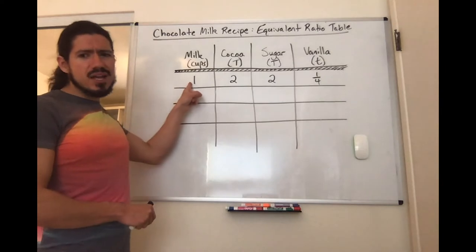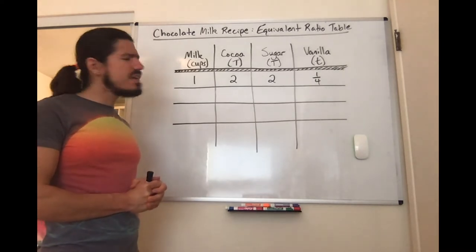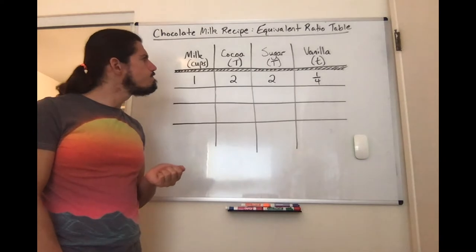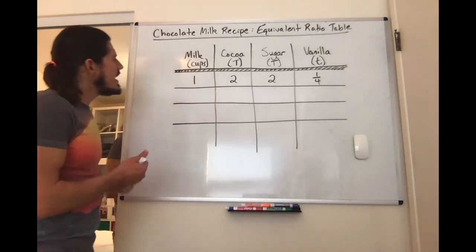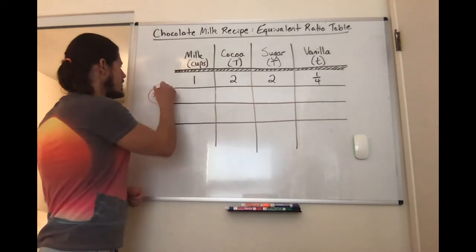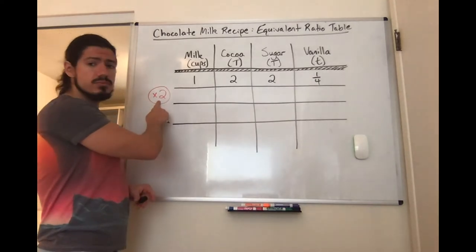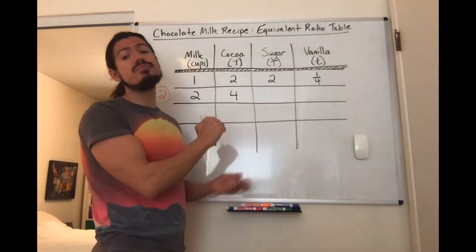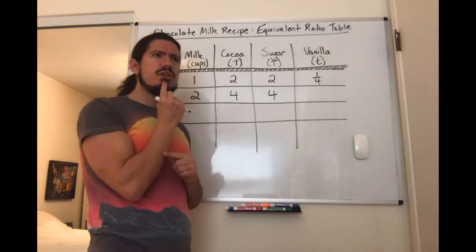This should probably make enough for one person. How can I figure out how much I need for two people? I know — I could double the recipe. If I take every single one of these values and multiply it by two, that should give me enough ingredients for two people. One times two is two; two times two is four; two times two again is four; and a fourth times two — if I have two fourths, that's the same as one half. So I would need half a teaspoon of vanilla. Now we have the recipe for two people.